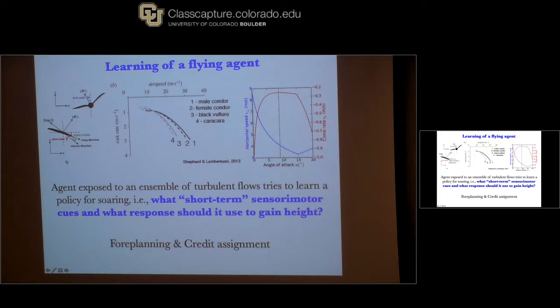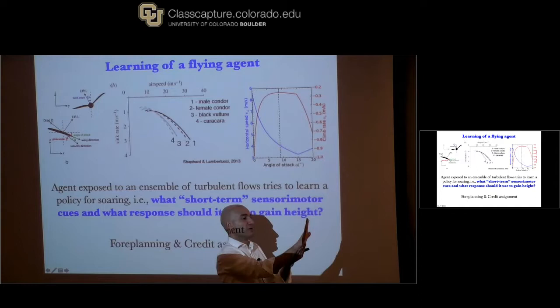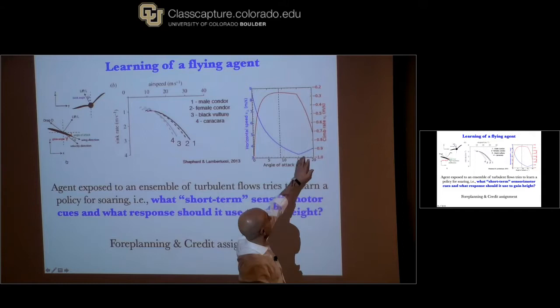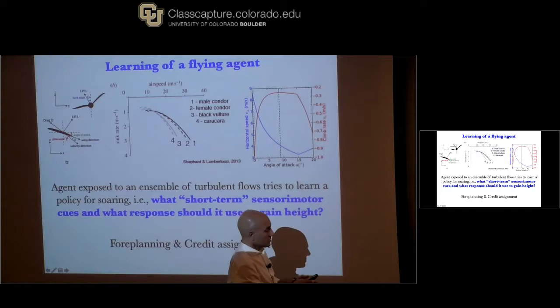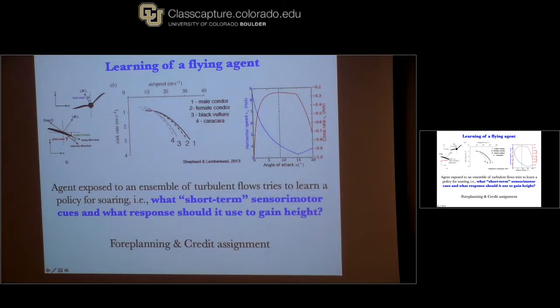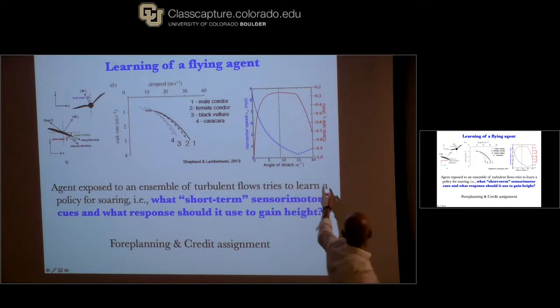These lift curves depend on angle of attack. At too steep an angle — the stalling angle — there's recirculation and you lose lift completely. The agent is put into these flows, and contrary to real life, we have many ensemble realizations. We can try different sensory-motor cues — temperature, velocity, acceleration — and see which is effective. There is clearly a problem of forward planning: you can't be too greedy. And there's the problem of credit assignment — a key challenge in machine learning — knowing which moves along a multi-minute episode led to a good final height.